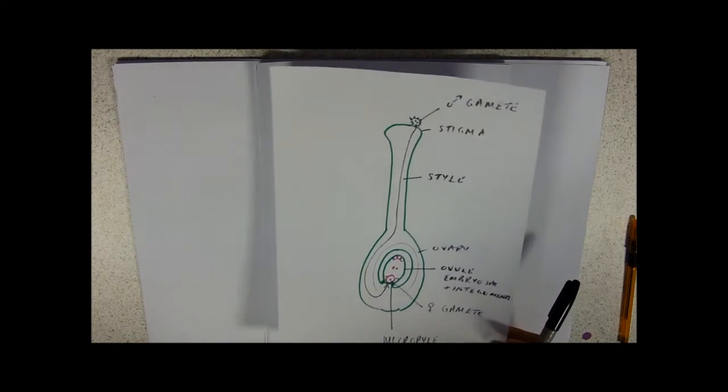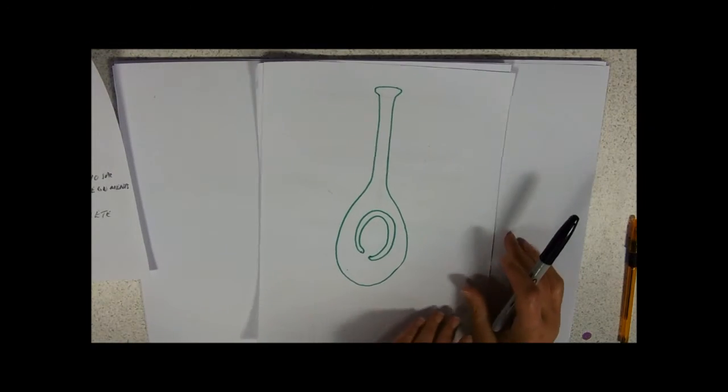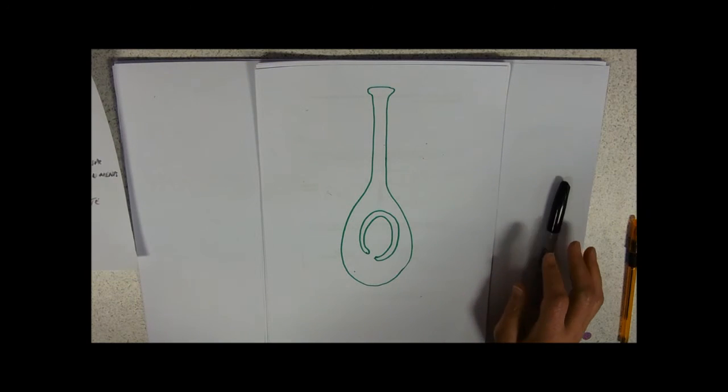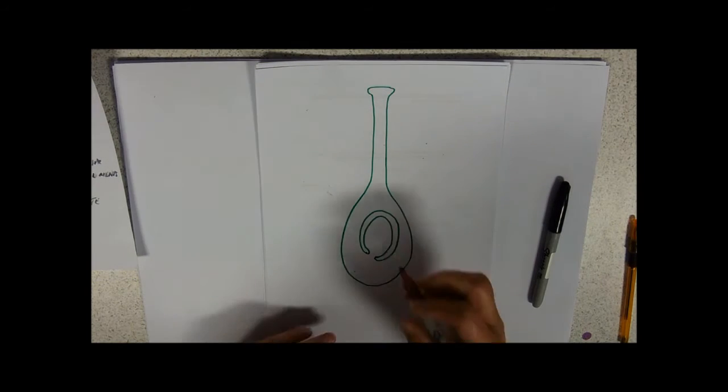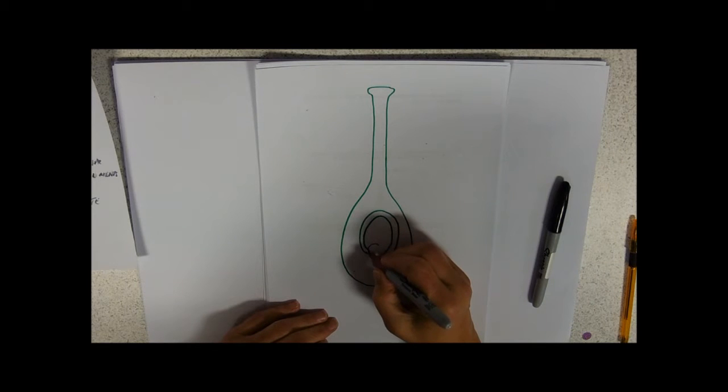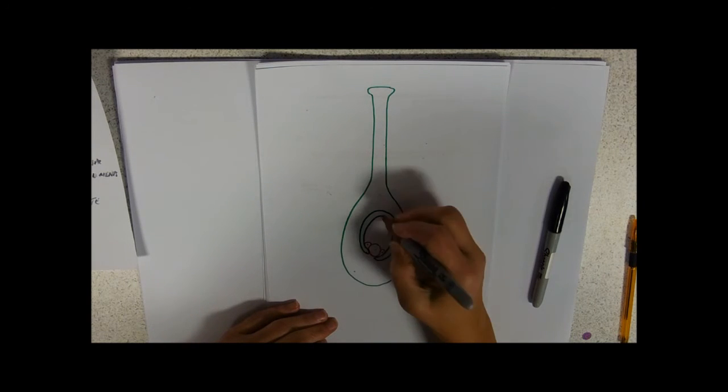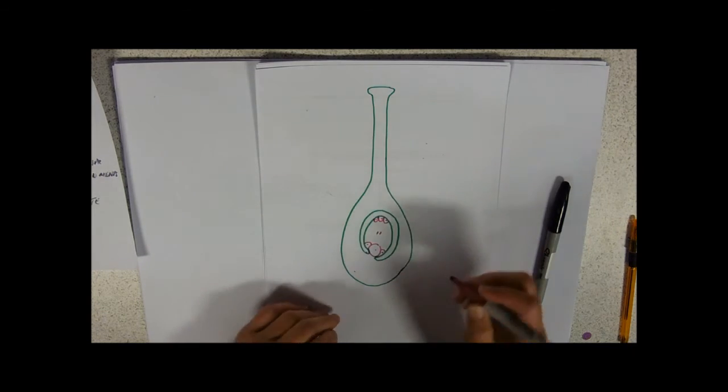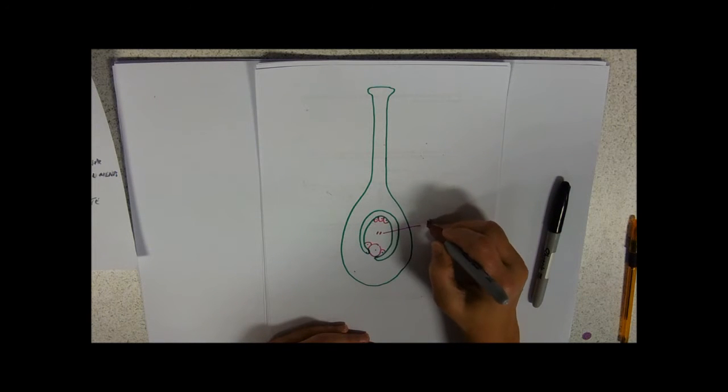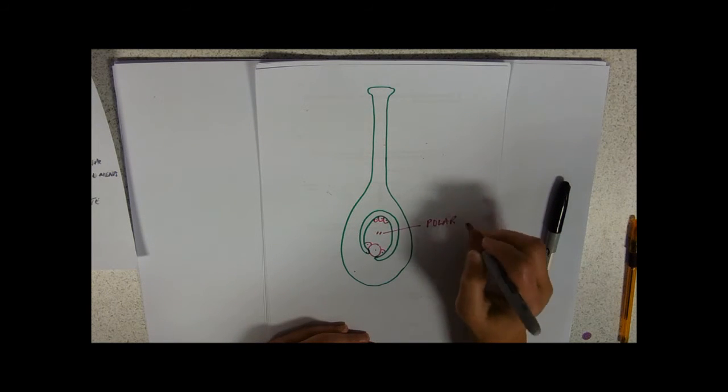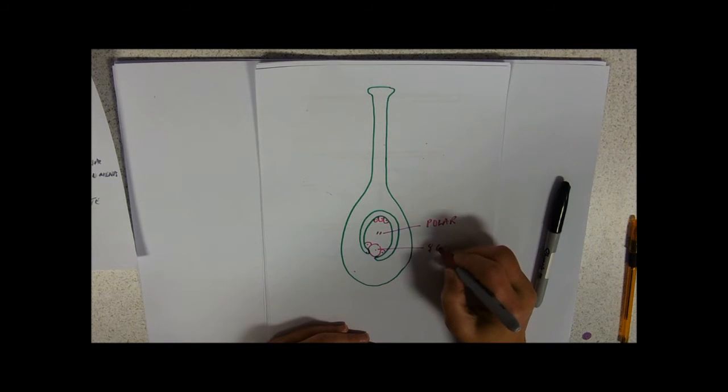So what happens when it gets down there? When it gets down to the female gamete, I'm just going to draw the female gamete in there, with its synergids, its antipodal cells, and then we've got these two polar nuclei here. And this is the female gamete.